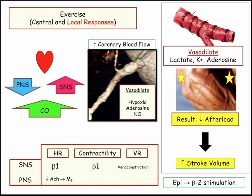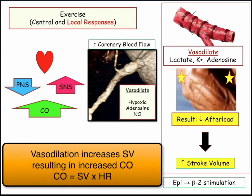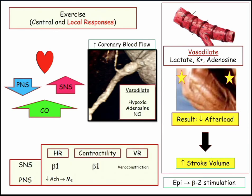Our heart does much better with decreased afterload. So with exercise, our skeletal muscle dilates and it helps with our forward fraction of blood. We have coronary blood flow, but we also have decreased afterload, which increases our stroke volume — and technically increases our pulse pressure too, though they don't ask about that. Epinephrine is also going off, stimulating beta-2 receptors that are good for our lungs but also cause a little vasodilation.